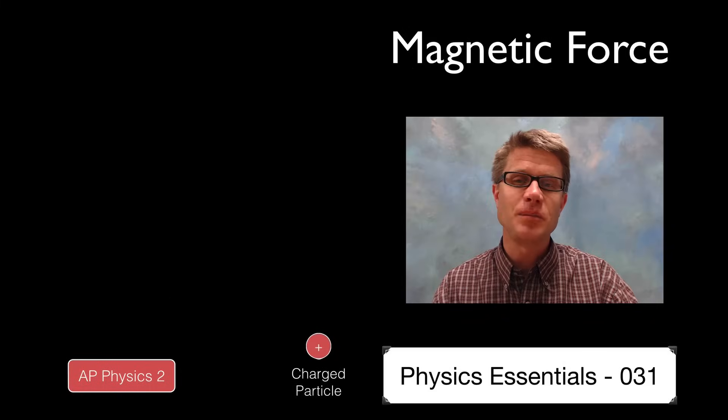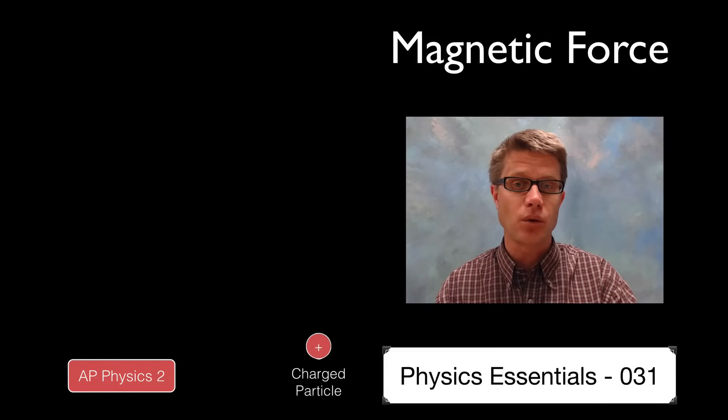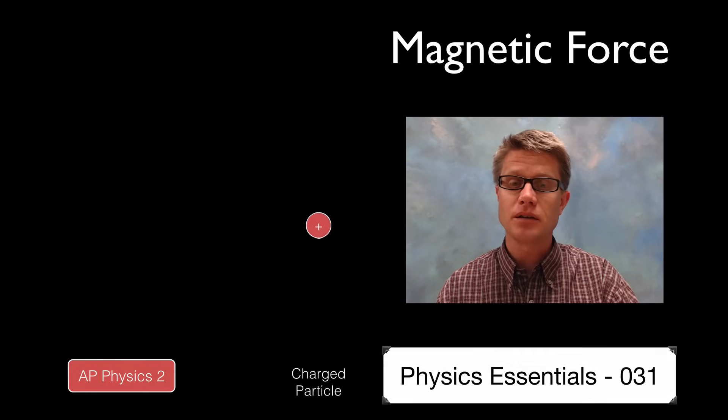Hi, it's Mr. Andersen and this is AP Physics Essentials video 31. It's on the magnetic force. Imagine we have a charged particle, like a proton, moving through space.